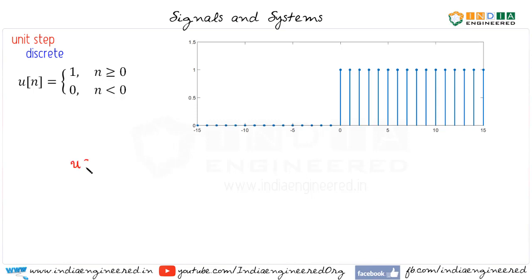Let's see the plot of u(n-5). u(n-5) means the signal should shift right by 5 units. This is u(n-5), it starts from 5. Now let's see u(n+5).